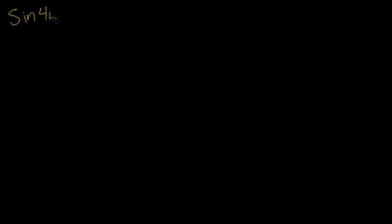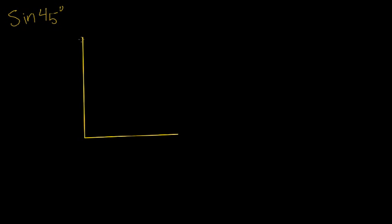First, let's try to find something like sine of 45 degrees. There's actually a way to find this geometrically — it's pretty simple. I'm just going to draw a right triangle, and for this right triangle, we want the angles to be 45 degrees, 90 degrees, and 45 degrees.